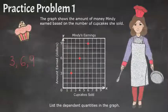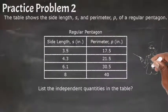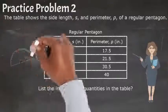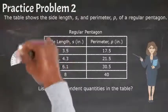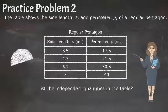Let's check out another practice problem. This one says that the table shows the side length s and the perimeter p of a regular pentagon. List the independent quantities in the table. Since the perimeter of a polygon depends on the side length, side length is independent and perimeter is dependent.